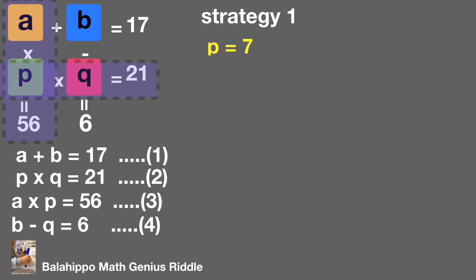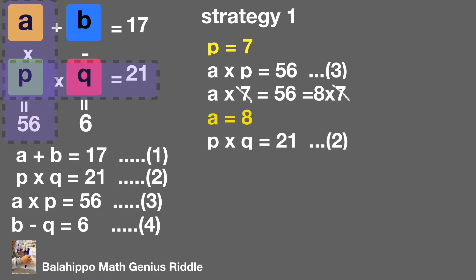After that, check equation 3. A times P equal to 56. We get A equal to 8. Then look at equation 2. P times Q equal to 21. Substitute P by 7. We get Q equal to 3.